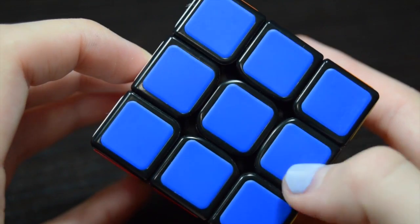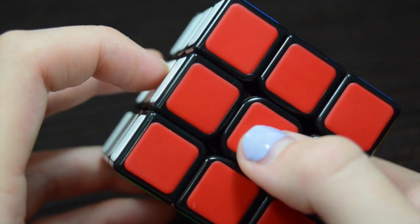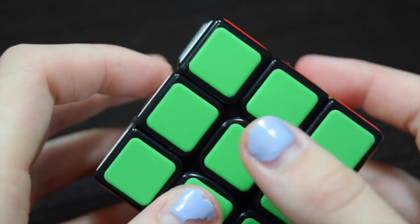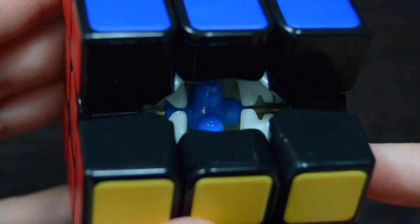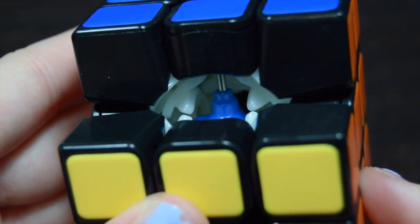Jumping right into stats about this puzzle, it comes with matte tiles on it, and they do take a little bit to get used to. It also comes with GAN's Octopus Core, because this is a collaboration with GAN.